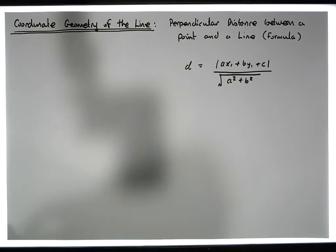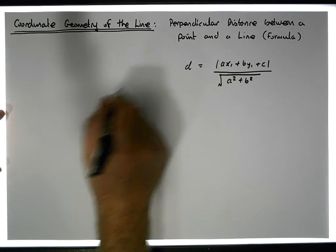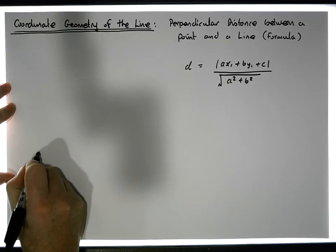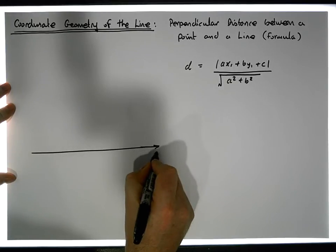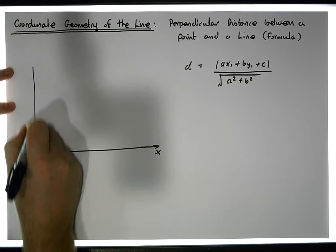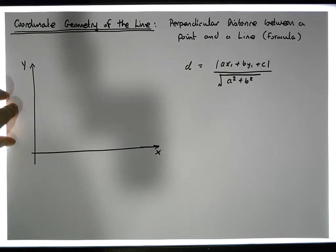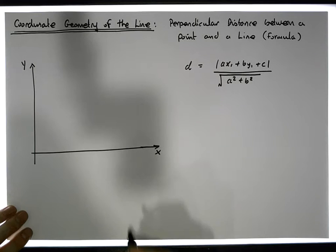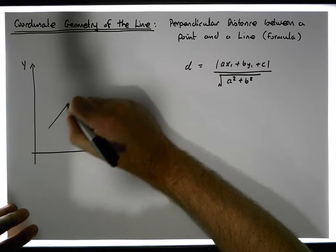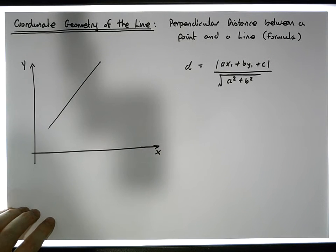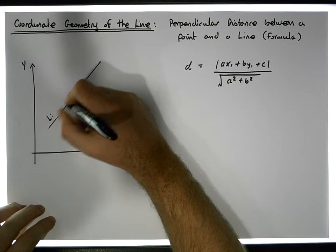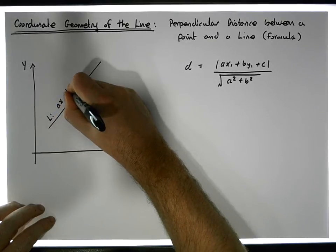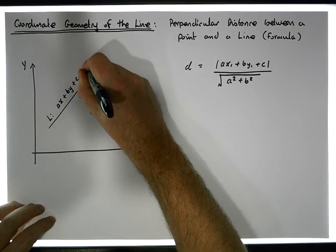Let's just look at this graphically through a coordinate system. So let's say we have an X axis here, and we have a Y axis which is perpendicular to the X axis. And let's say we have a line in space — let's call it L — and let's say the equation of that line is AX plus BY plus C equals zero.